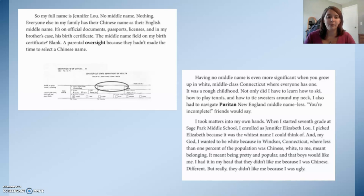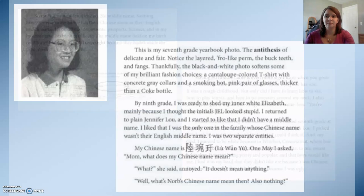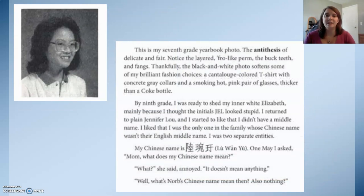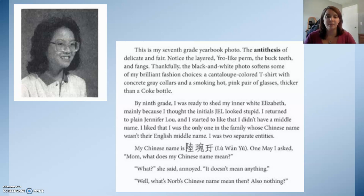Being white meant being pretty, popular, and having the boys like me. I had it in my head they didn't like me because I was Chinese and different — but really they didn't like me because I was ugly. This is my 7th grade yearbook photo — the antithesis of delicate and fair. Notice the layered fro-like perm, the buck teeth, and fangs. By 9th grade, I was ready to shed my inner white Elizabeth, mainly because I thought the initials J-E-L looked stupid. I returned to plain Jennifer Liu and started to like that I didn't have a middle name — I liked being the only one in the family whose Chinese name wasn't their English middle name.